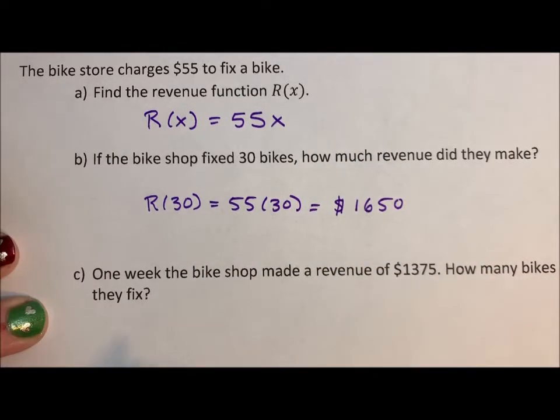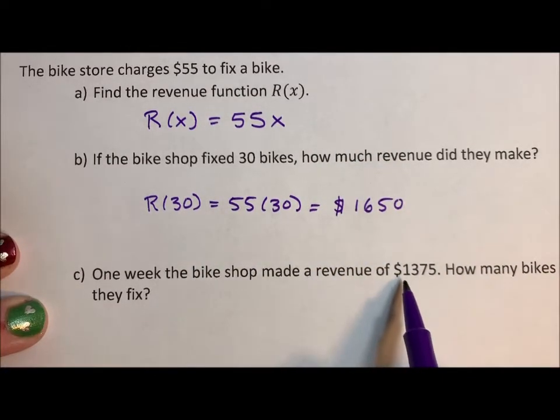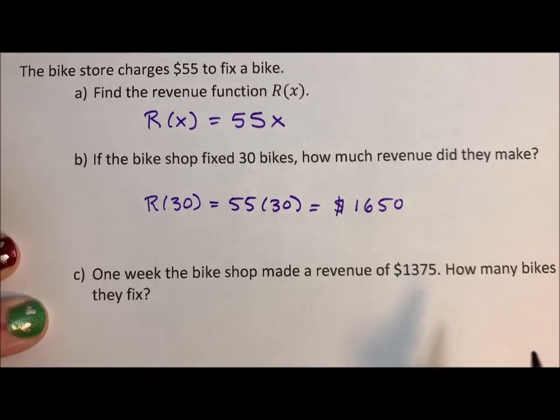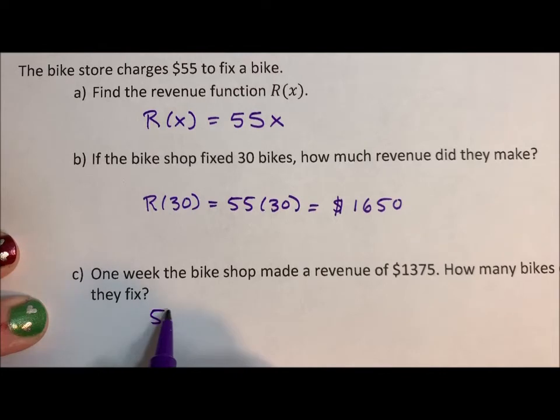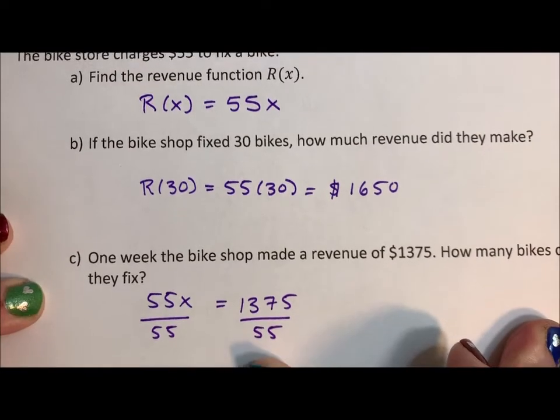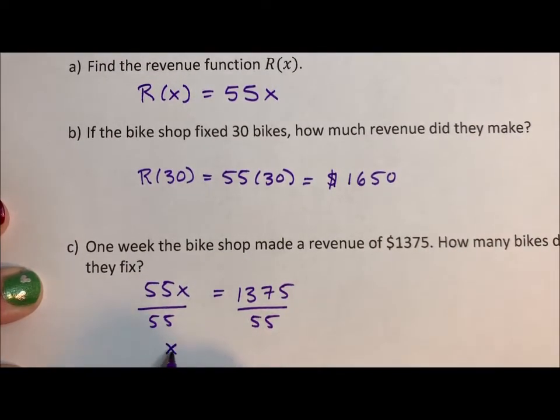One week, the bike shop made a revenue of $1,375. How many bikes did they fix? So 55x = 1,375. Divide both sides by 55, and x is equal to 25 bikes.